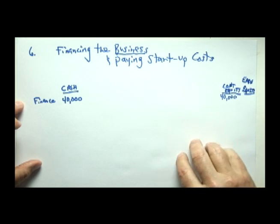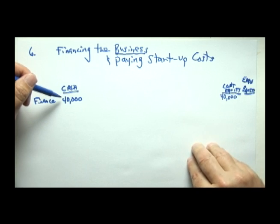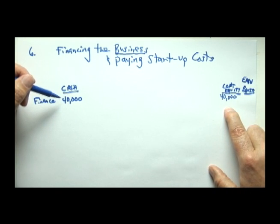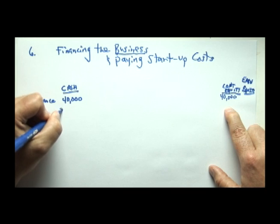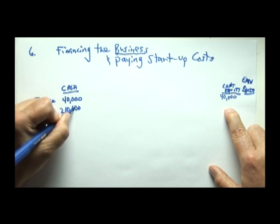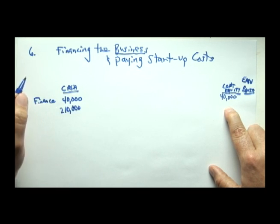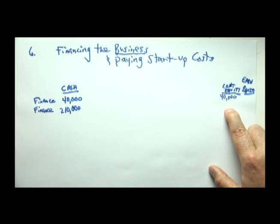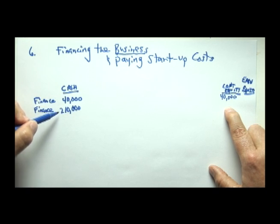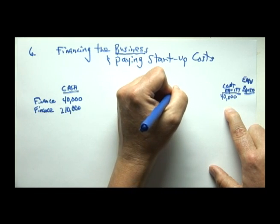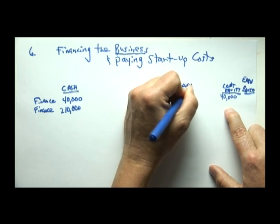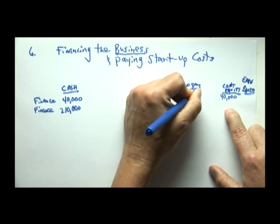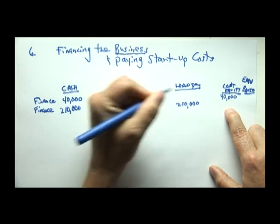Now if $40,000 is not enough to start a bike business, let's assume the student writes a business plan and is able to get a loan from the bank — could be Wells Fargo, Bank of America, or Umpqua Bank. So the student secures a $210,000 loan. Cash would go up and we'll call this loan payable, increasing the business debt by $210,000.